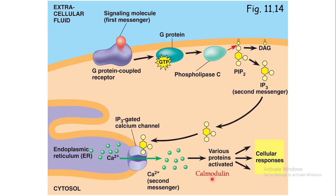Once calcium moves into the cytoplasm, it binds to a protein called calmodulin. The calcium-calmodulin complex activates a variety of proteins, for example CaM kinase 2. One important function of CaM kinase 2 in neurons is the release of neurotransmitters. This is one example where a ligand is responsible for the opening of an ion channel — a calcium channel in this case.